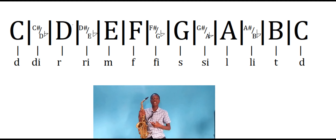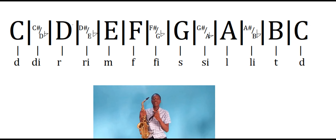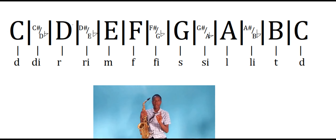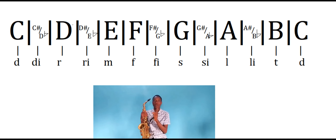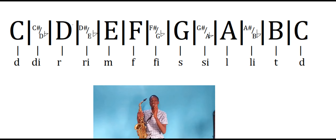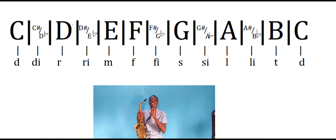Next one is F, giving the sound FA. Next one is F-sharp or G-flat, giving the sound Fi — also an accidental. Next one after F-sharp or G-flat is your G, giving the sound SO. Next one is G-sharp or A-flat, giving the sound Si — that's also an accidental. Next one is A, giving the sound LA. Next one is A-sharp or B-flat, giving Li. Some people call it Thor. It's also an accidental.